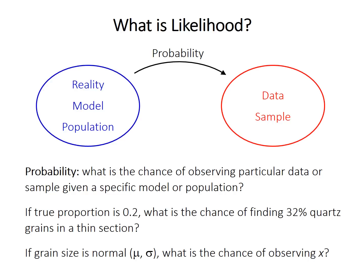We can then ask, what is the chance of observing this particular data, or sample, given that known reality? So for example, if the true proportion of quartz is 0.2, what is the chance, or what is the probability, of finding 32% in one particular sample?